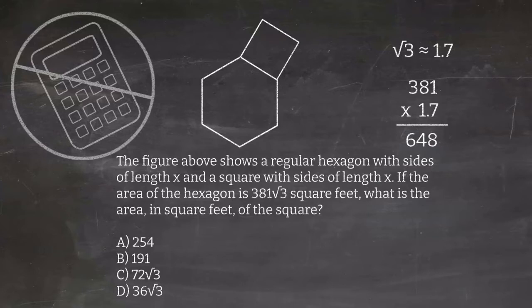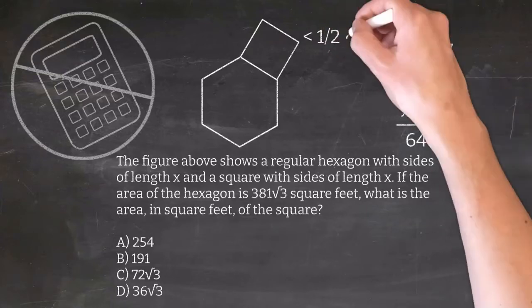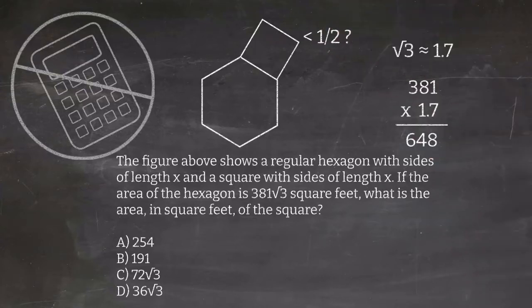Now we just estimate what fraction of the hexagon the square is. I recommend using a range of values. I don't know about you, but I think the square is definitely less than half of that hexagon, but maybe a little bit more than one third.